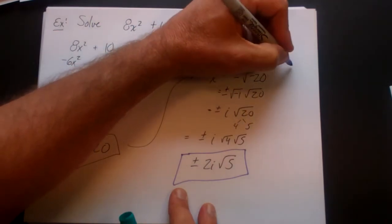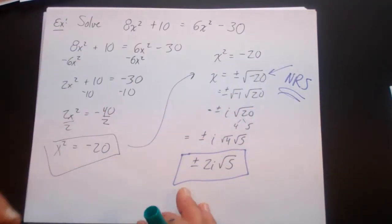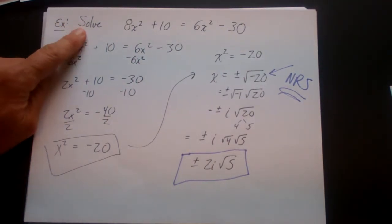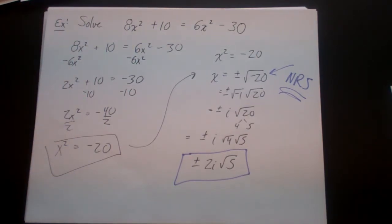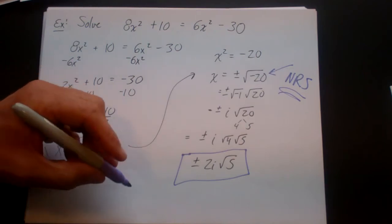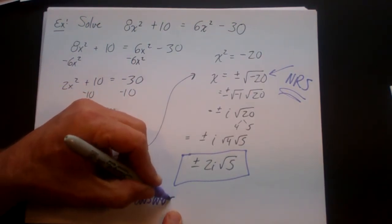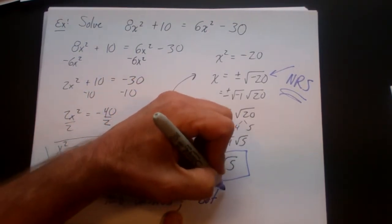Interestingly, if you stopped at x squared equals negative 20 and wrote 'NRS' for no real solution, that's not incorrect. Often you need to know whether you're interested in complex solutions, or the problem specifically says to solve for complex solutions. Here you have two answers, both imaginary because of the i, and there are two answers because of the plus and minus.